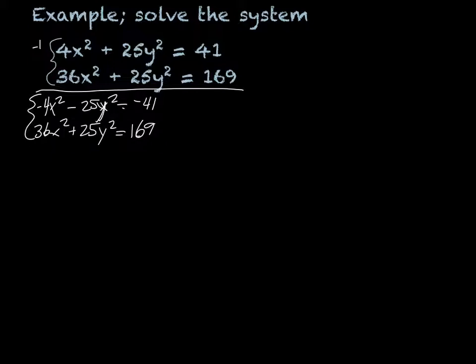And then at this point, we can just add down like we would if they were linear. And then we would have 32x². And my y's would cancel out. And then negative 41 plus 169 is going to give me a positive 128.